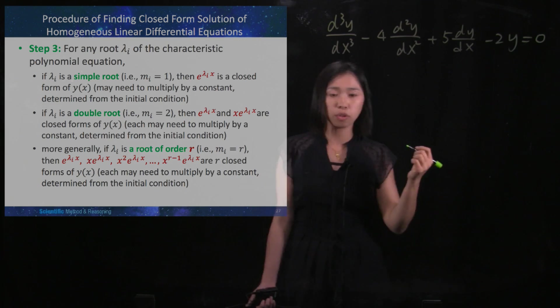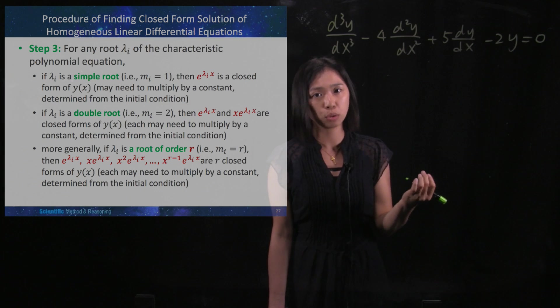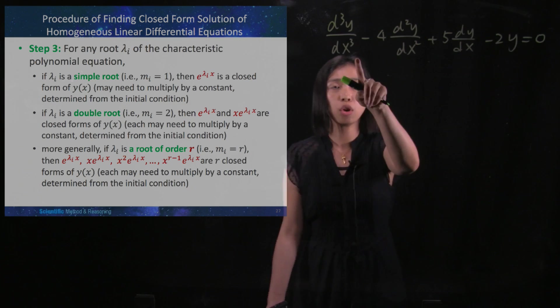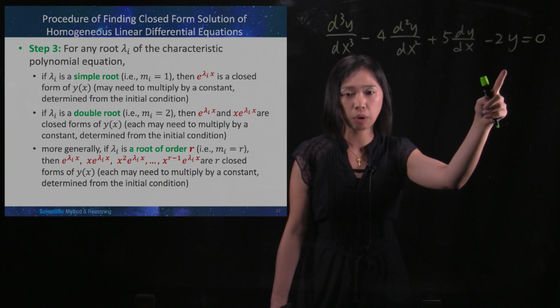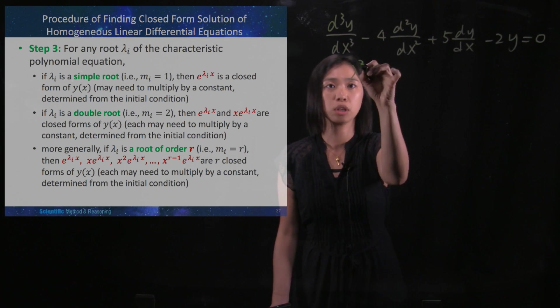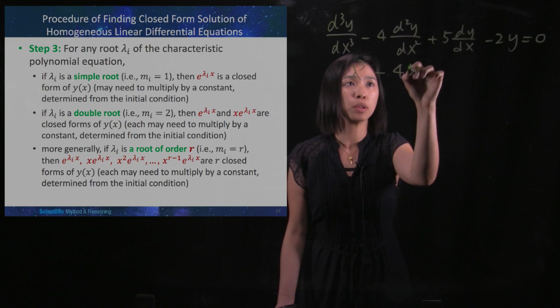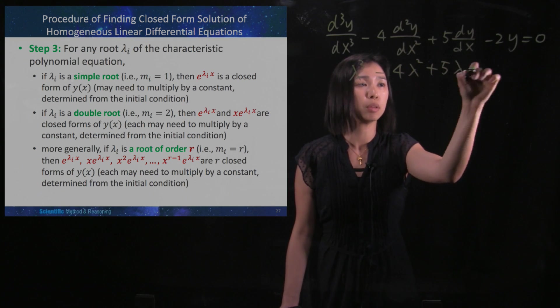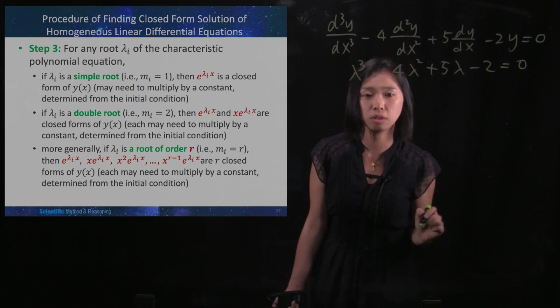First of all, referring to the previous video, I will convert this third order homogeneous linear differential equation into a characteristic polynomial. So it becomes λ³ - 4λ² + 5λ - 2 = 0.